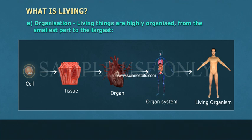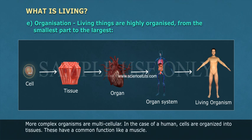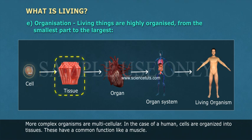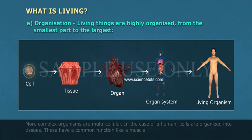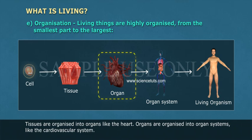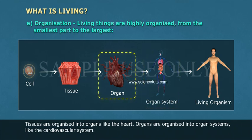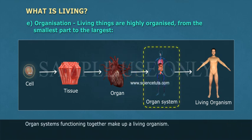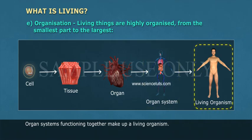Some single-celled organisms are free living and contain structures called organelles that allow them to be self-sufficient. More complex organisms are multicellular. In a human, cells are organized into tissues, which have a common function like muscle. Tissues are organized into organs like the heart. Organs are organized into organ systems like the cardiovascular system. Organ systems functioning together make up a living organism.